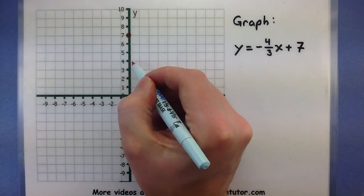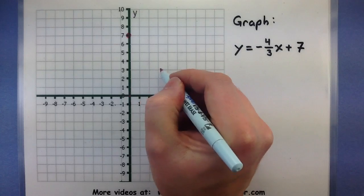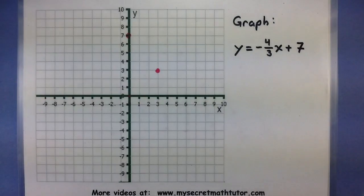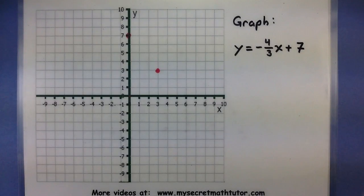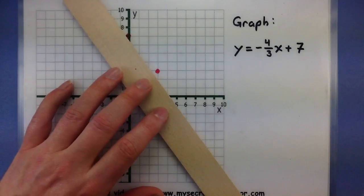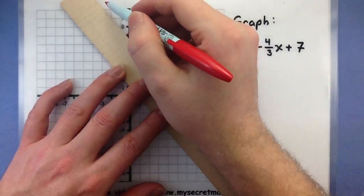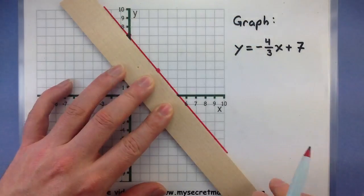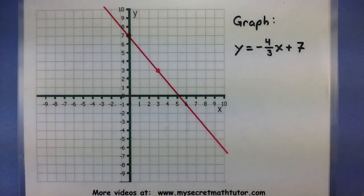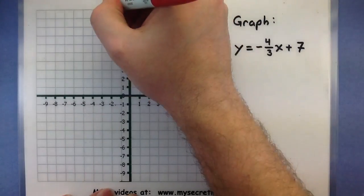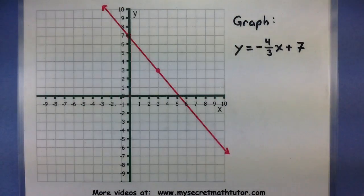So down 1, 2, 3, 4, and to the right 1, 2, 3. This gives me a second point on that line. Now that I have two points, it's just a matter of connecting them. There we go — we have our line. Nice and simple.